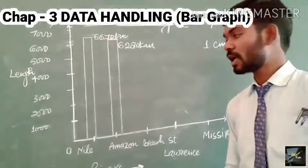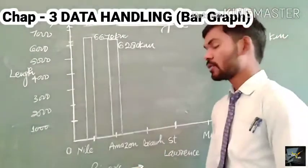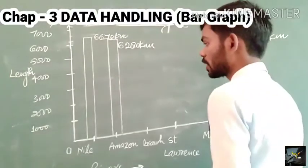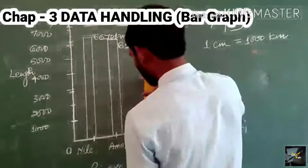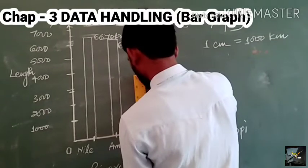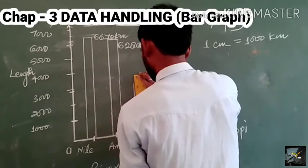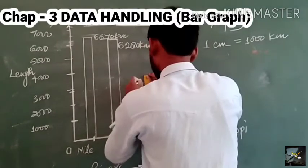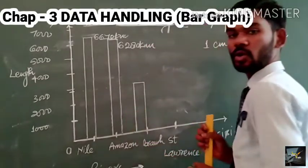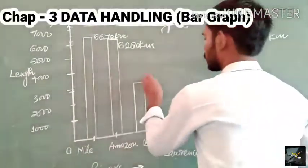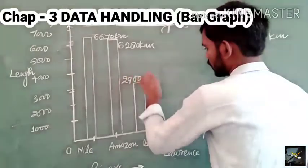Next, let's see the length of the Brahmaputra river. The Brahmaputra river's length is given as 2900 kilometers. Therefore, the point 2900 may be found at this point. So the bar for the Brahmaputra river will be drawn here. This is the length of the Brahmaputra river, which is equal to 2900 kilometers.